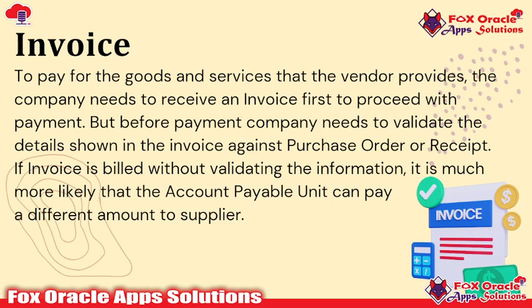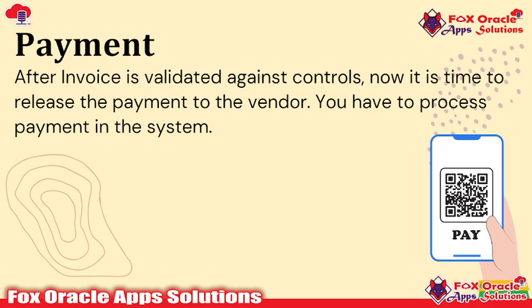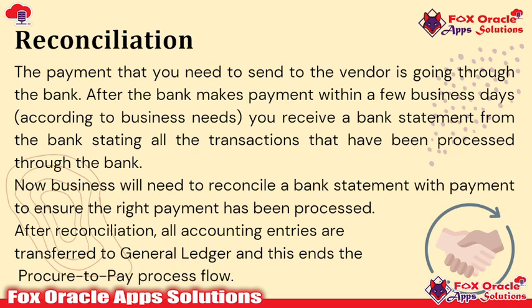We have the option to create a purchase order with different receipt routines — that can be a one-to-one direct check or it can include inspection. Once the invoice is created, we go for payment and process the payment for that specific invoice. After the invoice is validated against the controls, it is time to release the payment to the vendor. You process the payment in the system and generate a payment document to send to the bank.